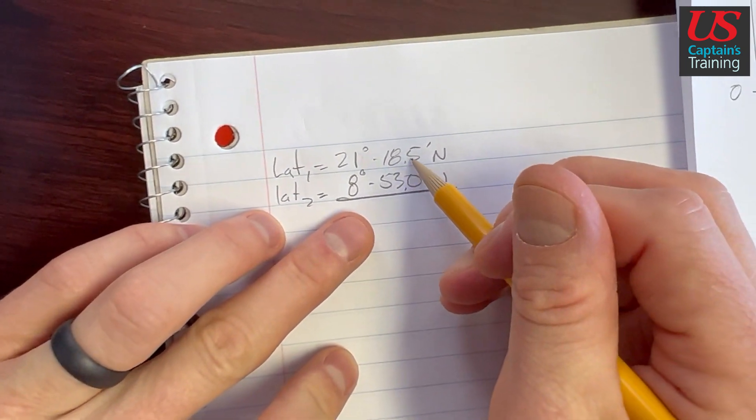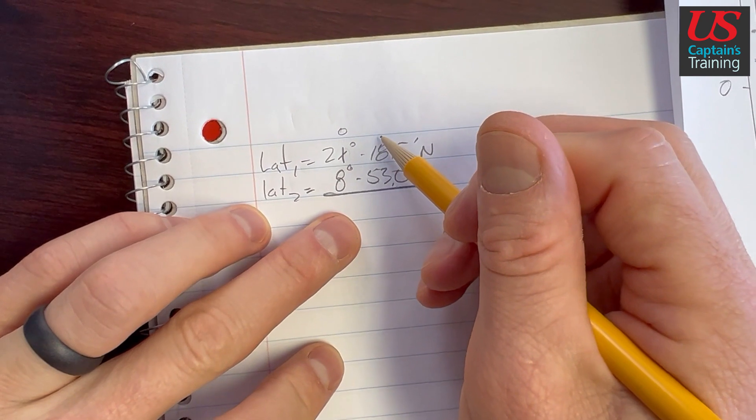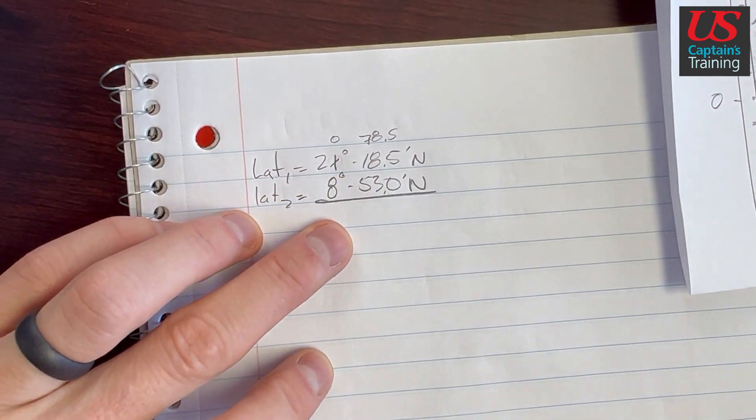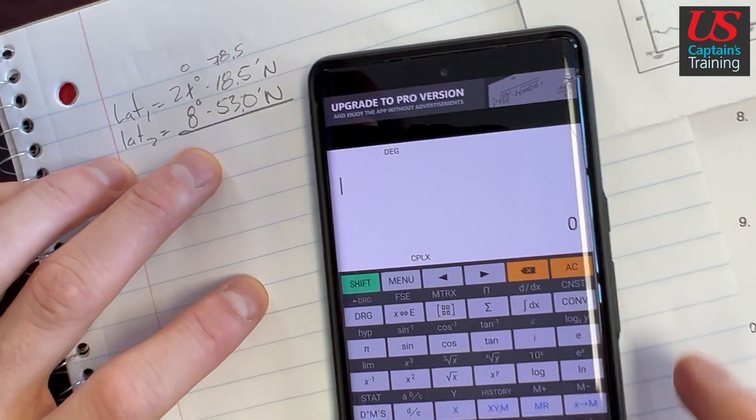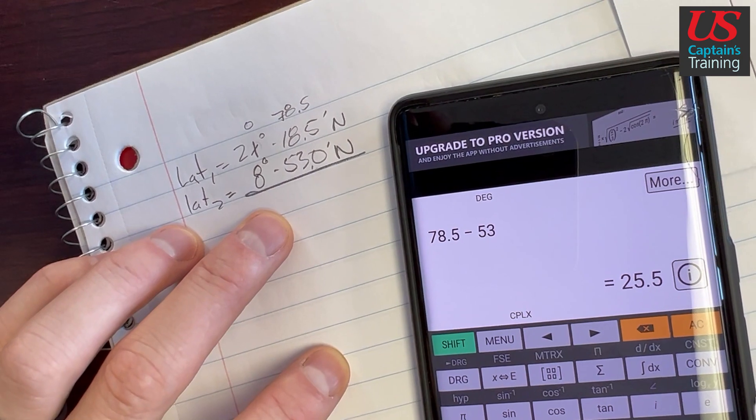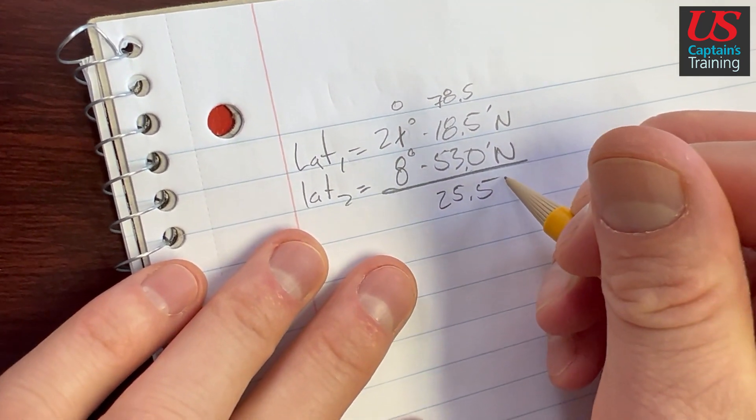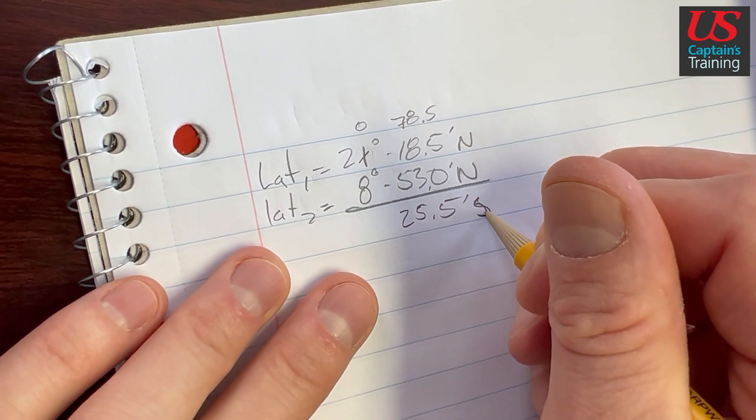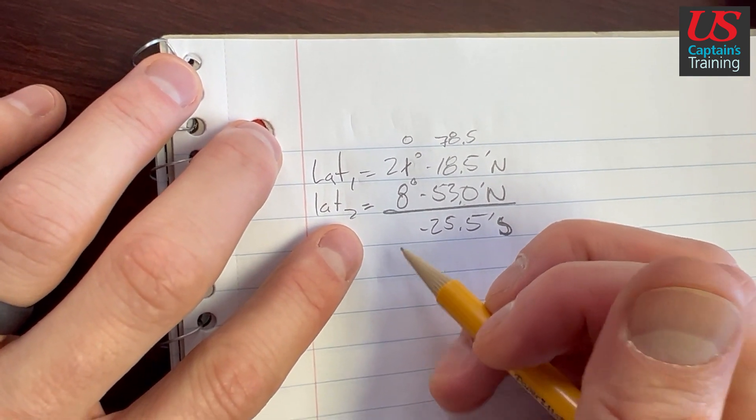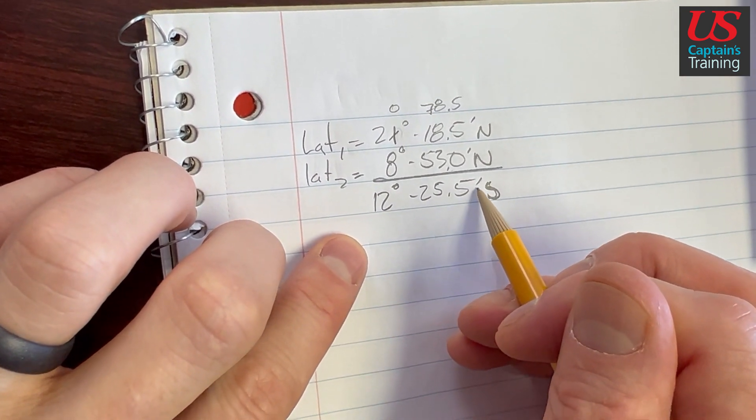So let's figure out the difference here. We're going this 18.5, we can't take 53 from there, so we'll borrow. And this will turn to a 0 and this will add 60, so this will be 78.5. Let's just put that in the calculator. 78.5 minus 53 equals 25.5, 25.5 degrees south. Remember we said we went south. And now 20 minus 8 is 12. 12 degrees 25.5 minutes south.